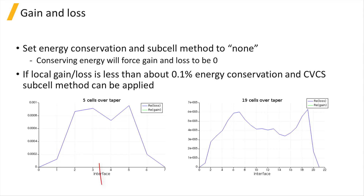Here, in both cases with 5 or 19 cells, the gain and loss are low enough for energy conservation and the CVCS subcell method to be used, although you can see that the loss is reduced by more than an order of magnitude over the taper region of the device when the number of cells is increased to 19.